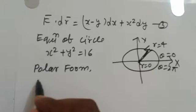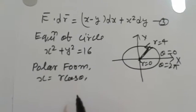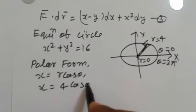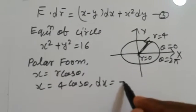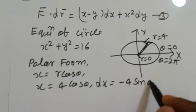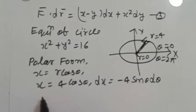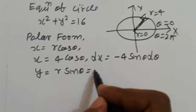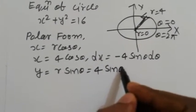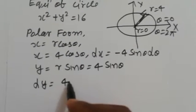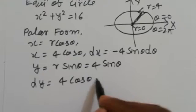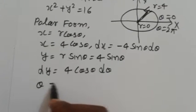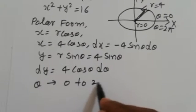In polar form: x = r cosθ, so with r = 4 we get x = 4 cosθ, which implies dx = −4 sinθ dθ. And y = 4 sinθ, which gives dy = 4 cosθ dθ. Theta varies from 0 to 2π.